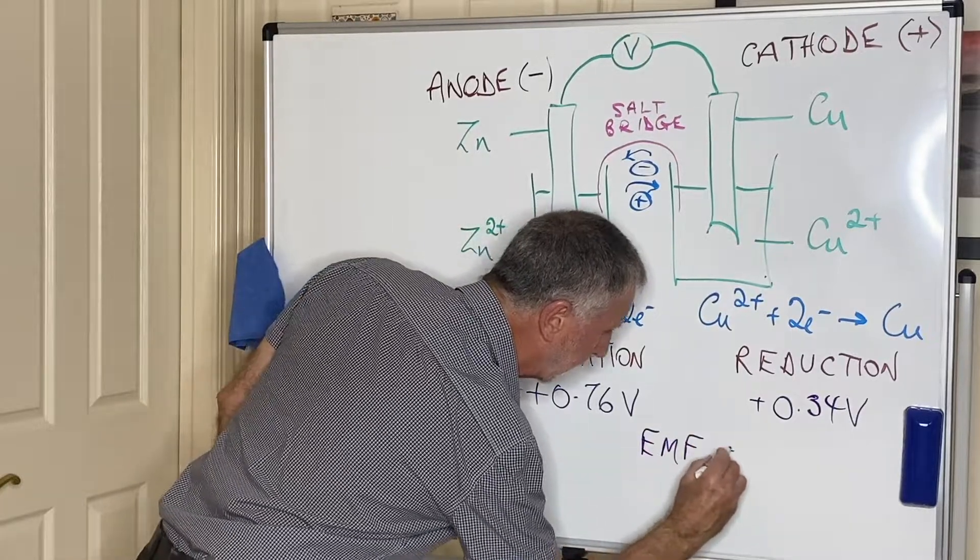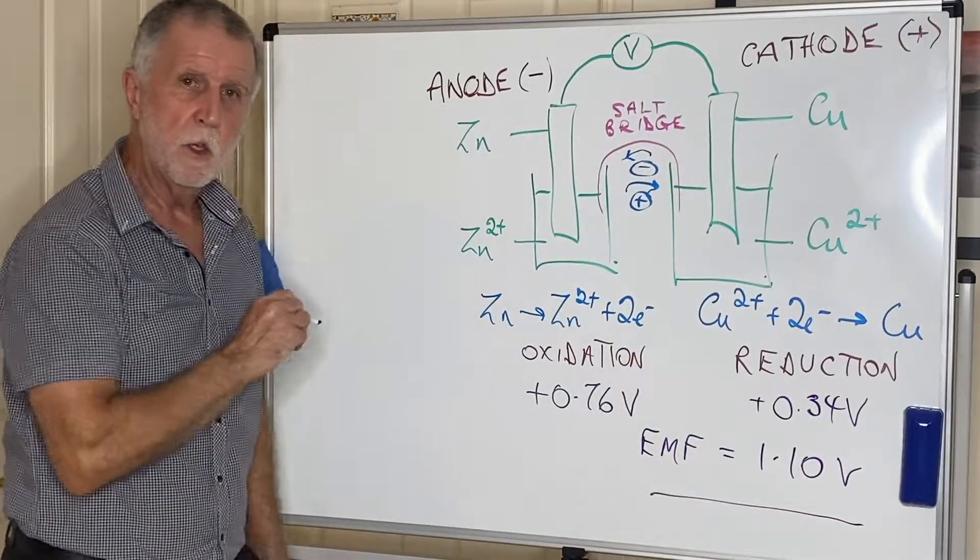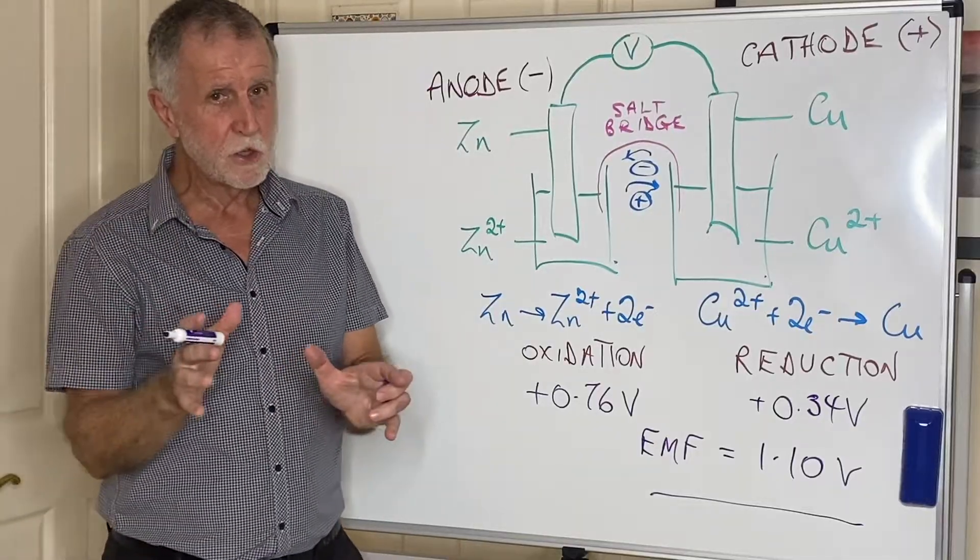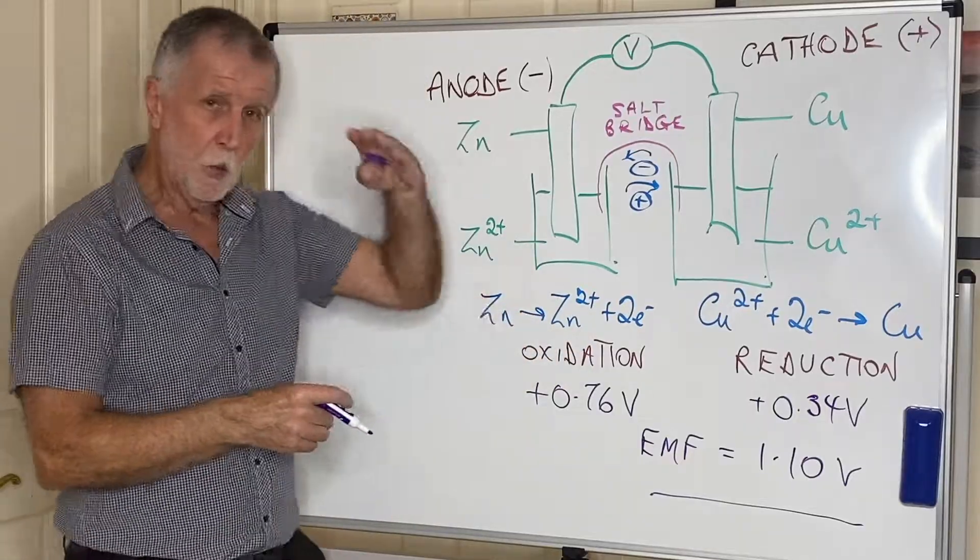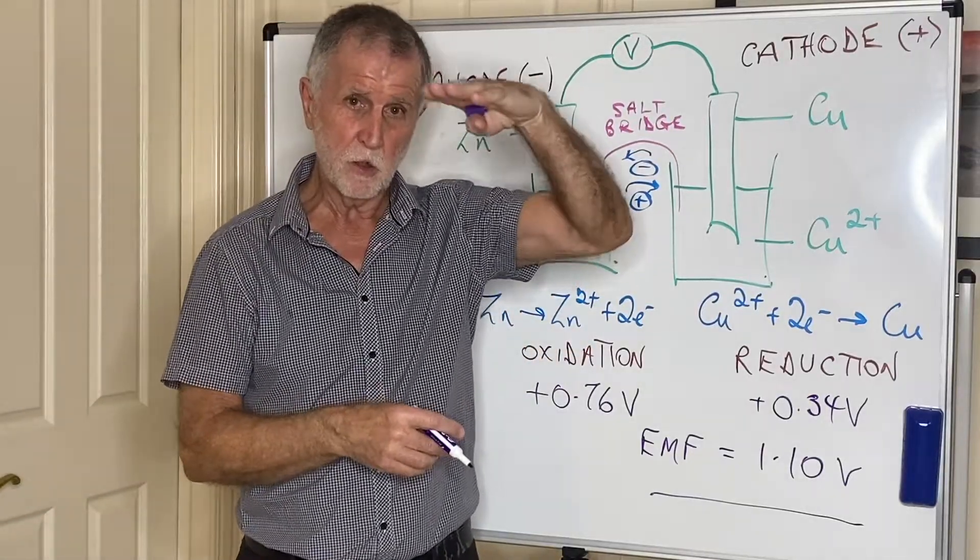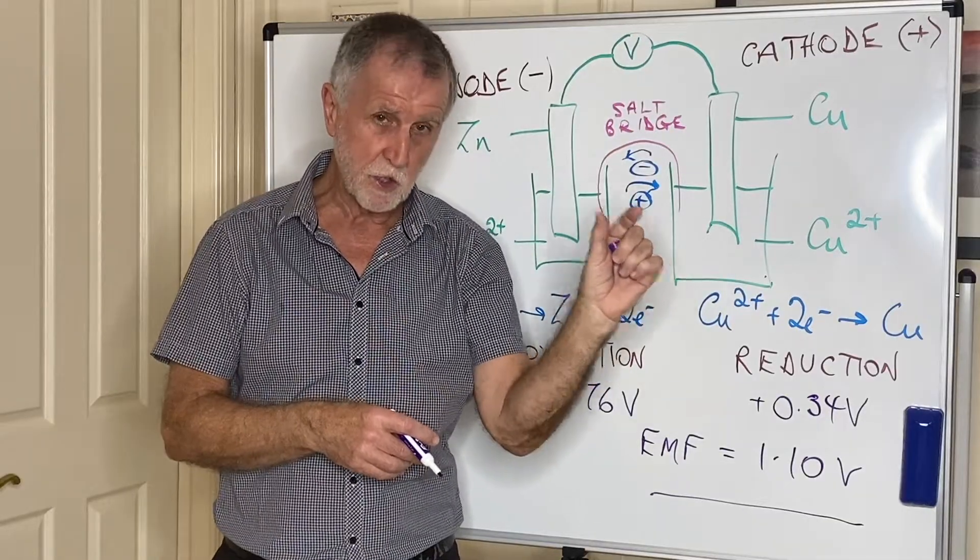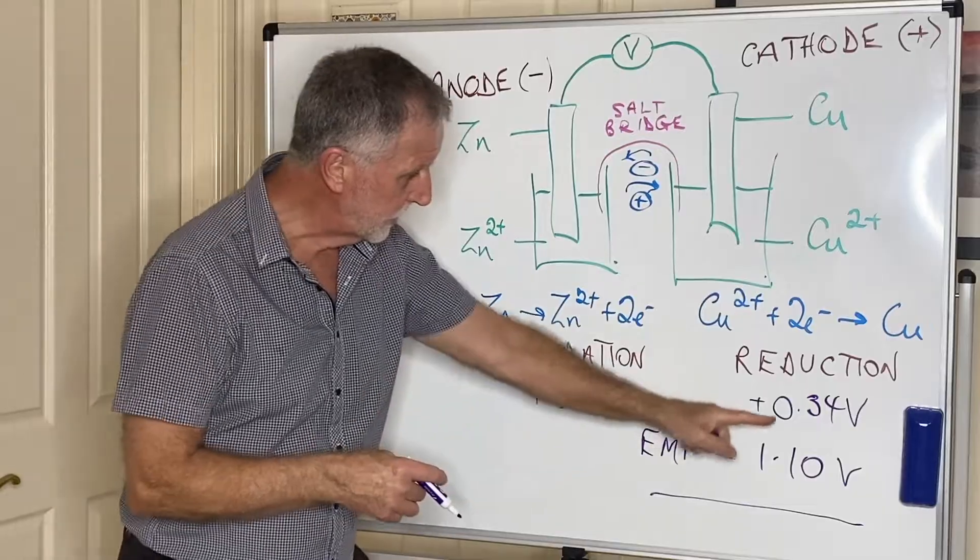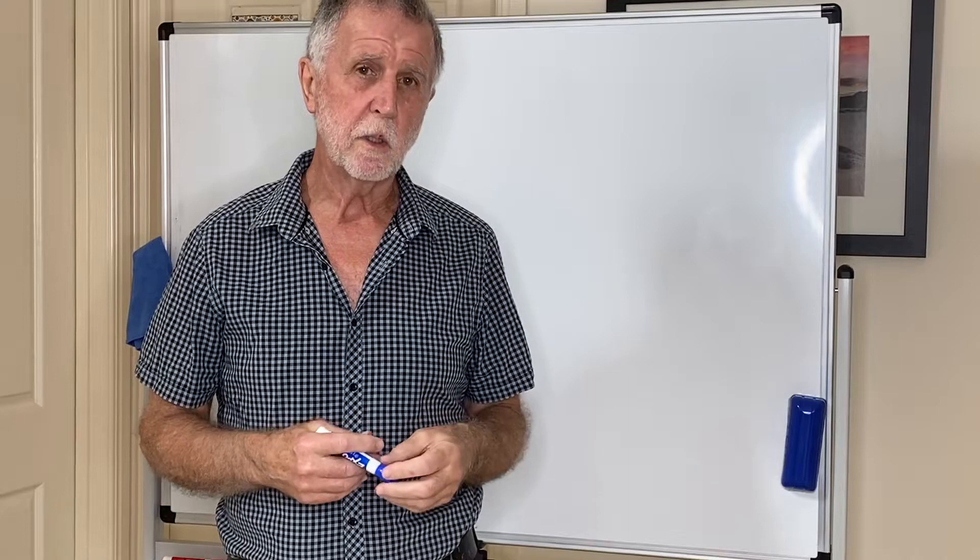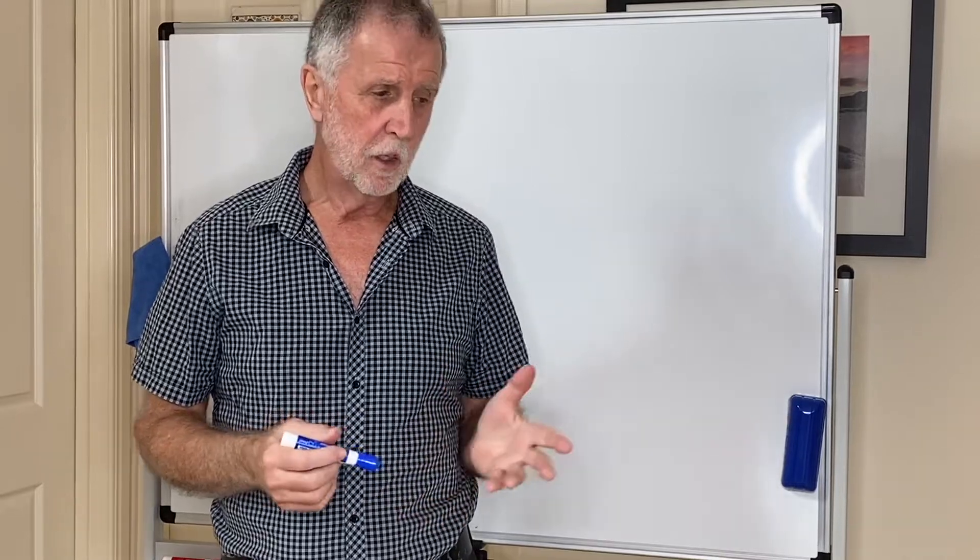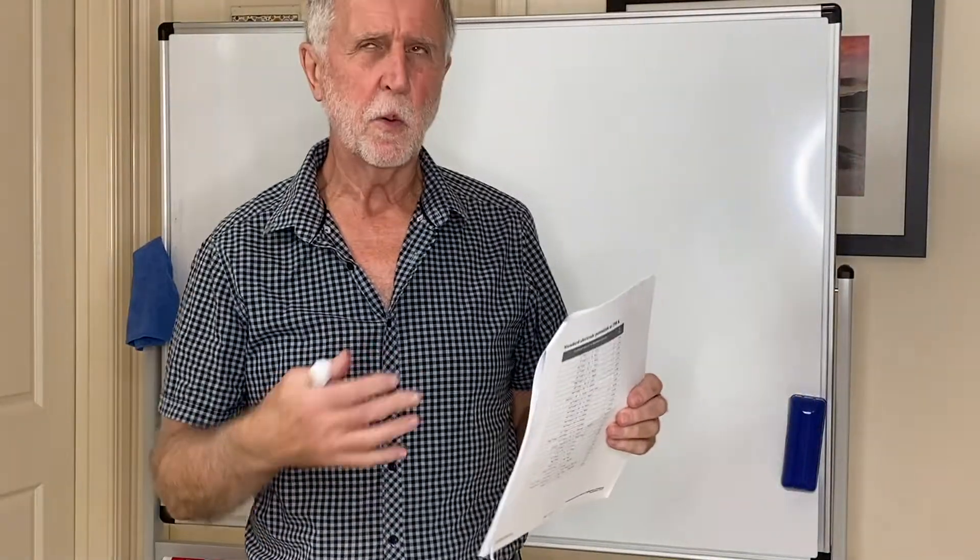Now there are different ways of doing this. My personal recommendation, the easiest way to do it, is whichever reaction is higher up, reverse it, which means changing the sign of its standard electrode potential, and then adding it to the other one to give the overall voltage.